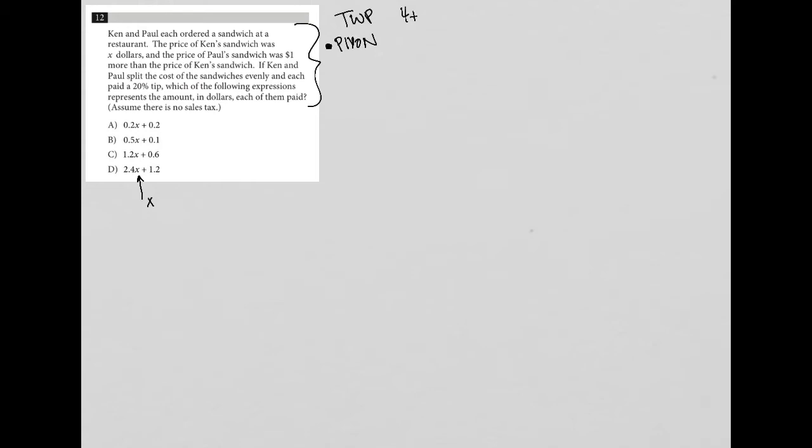So the question says, Ken and Paul each ordered a sandwich at a restaurant. The price of Ken's sandwich was X dollars. OK, so here's where I may want to make up a number. I usually say X equals two, but let's keep reading and see if there's a better number for this price of the sandwich. The price of Paul's sandwich was one dollar more. You know what? I'm going to just go with two.